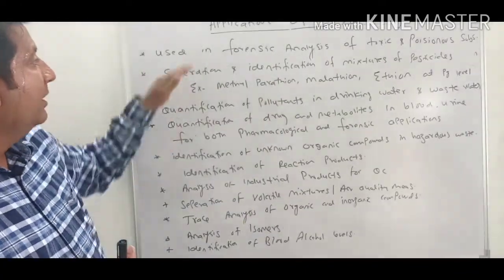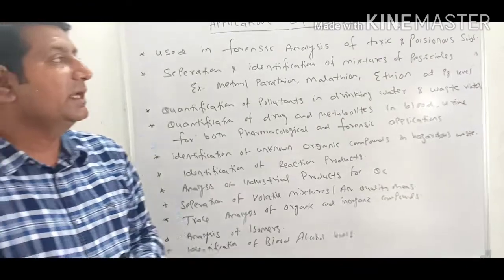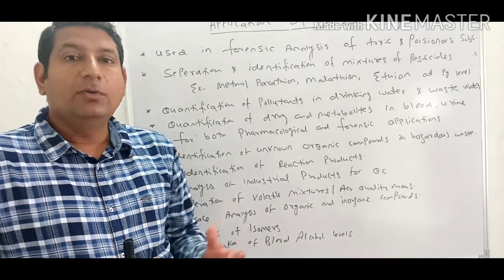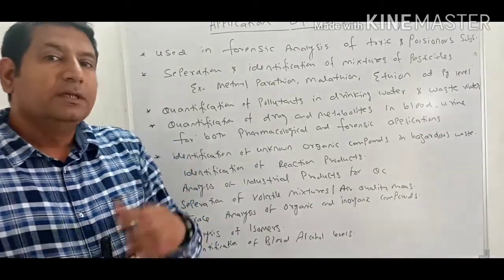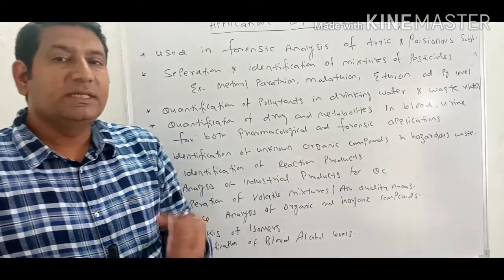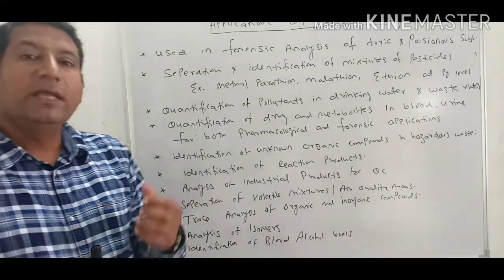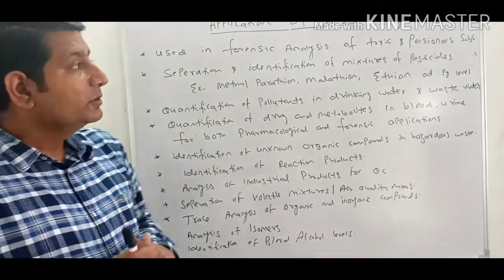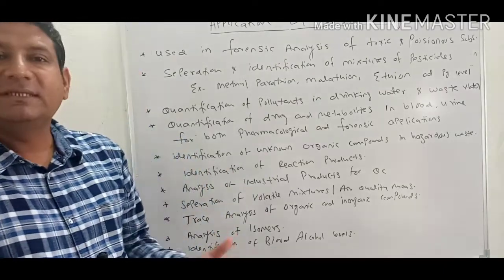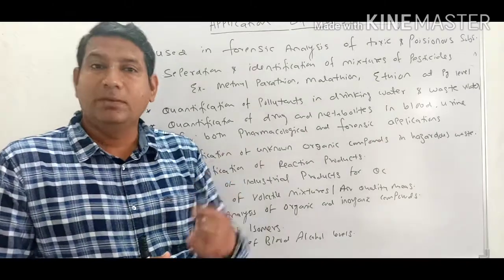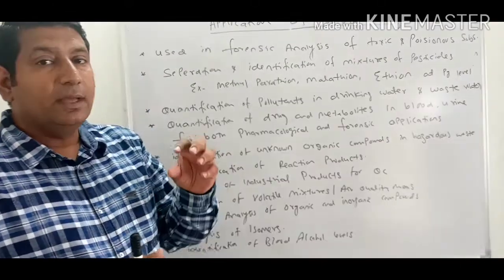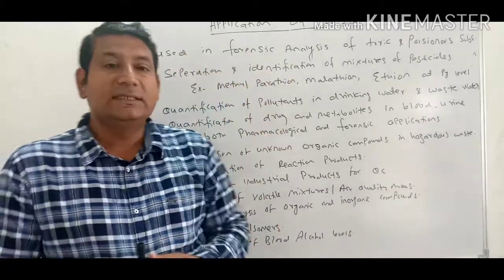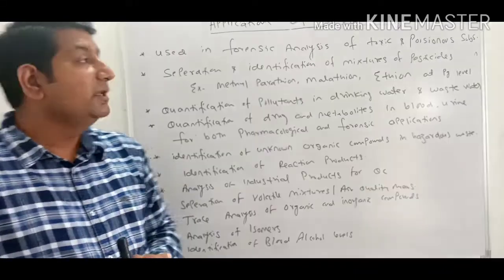Application number one: gas chromatography is used in forensic analysis of toxic and poisonous substances. In forensic sciences, the amount of drug has to be identified in blood. Since the quantities of such substances are very small — in the micro and nanogram range — they must be identified with a technique that has very high sensitivity. For bioanalysis of toxins and poisonous substances in the human body, gas chromatography is the preferred and most suitable technique.